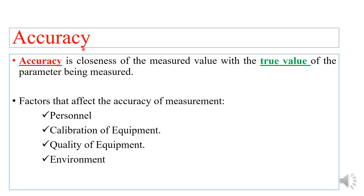Accuracy is the closeness of the obtained result with the true value for any parameter that is being measured or tested. The factors that affect the accuracy of a test procedure are the personnel performing the test, the calibration of the equipment, the quality of the equipment and the reagents, and the environment — room temperature and humidity of the laboratory.